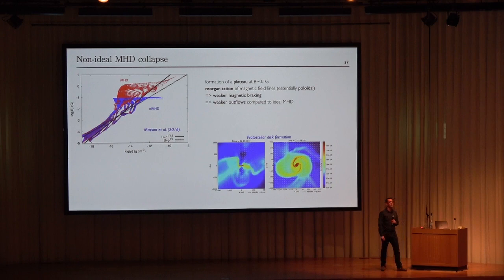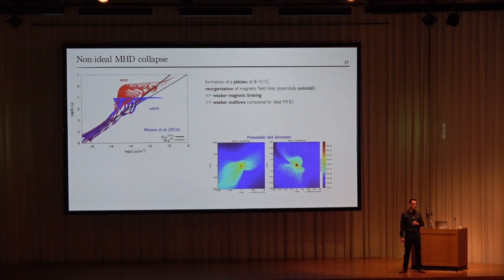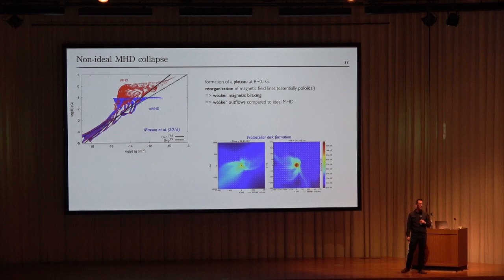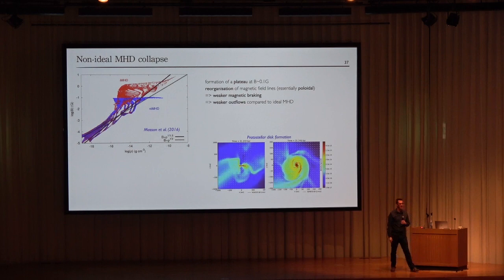Daniel Seifert from the University of Cologne: You mentioned that protostellar feedback including cosmic rays or X-rays is not fully included yet and could boost ionization. How sure are you that non-ideal effects are so important if you include this? Response: That's a big question — we have to test it. However, we need a central source for protostellar feedback to operate, so the initial collapse stage should be safe from this concern.